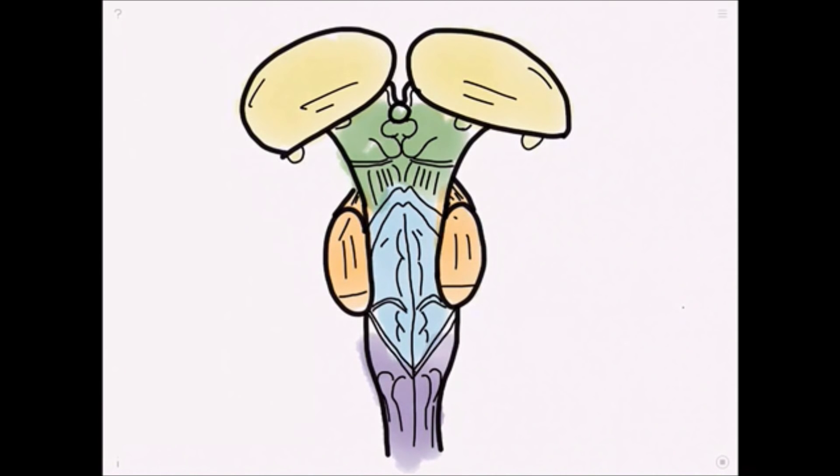So first up here we have the thalamus and beneath the thalamus we have the midbrain. We can also then label this the pons and the medulla.